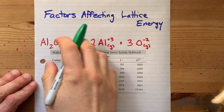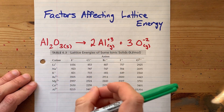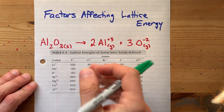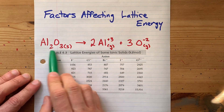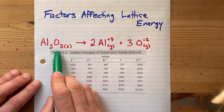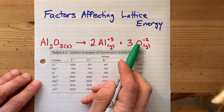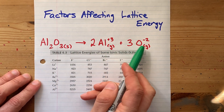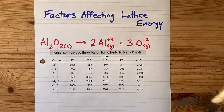What are the factors that affect the lattice energy — the amount of energy needed to break an ionic solid into its constituent ions, both in the gas phase?